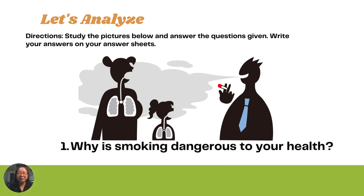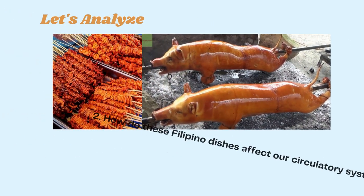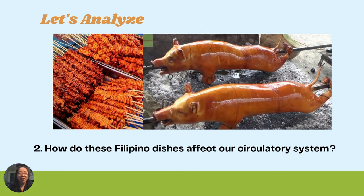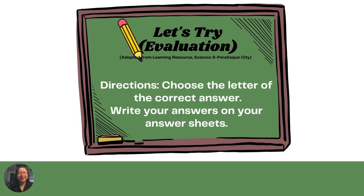For the Let's Analyze part of your module, study the pictures below and answer the questions given. Number 1: Why is smoking dangerous to your health? Number 2: How do these Filipino dishes affect our circulatory system? For the Let's Try part of your module, choose the letter of the correct answer and write your answers on your answer sheets.